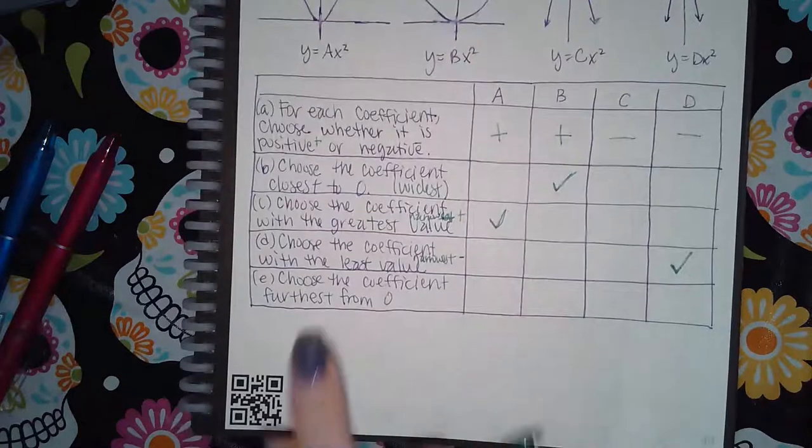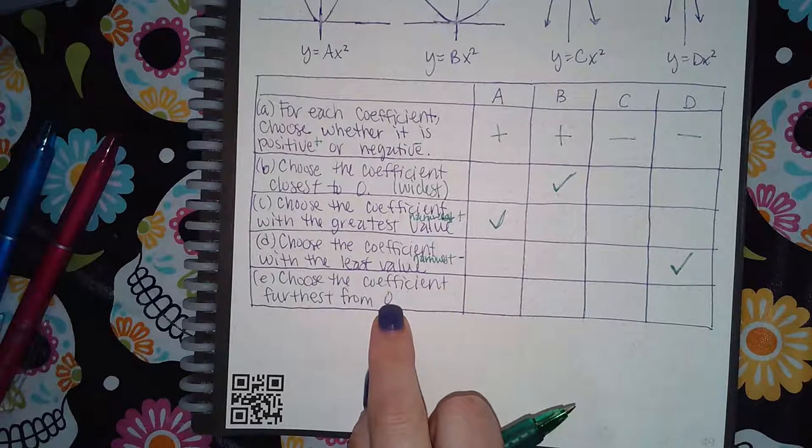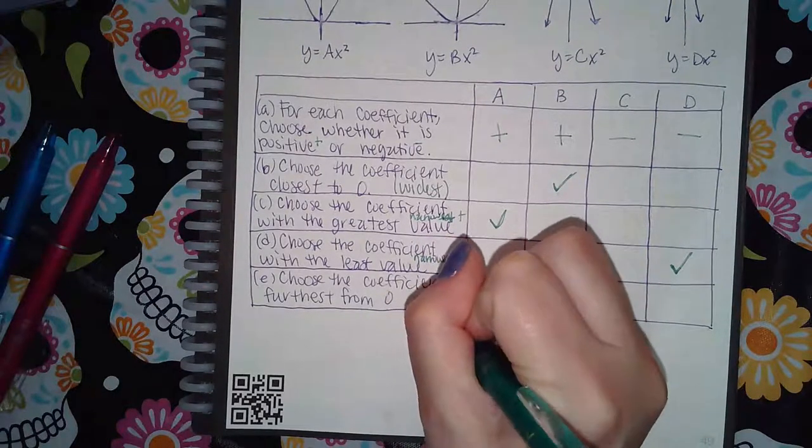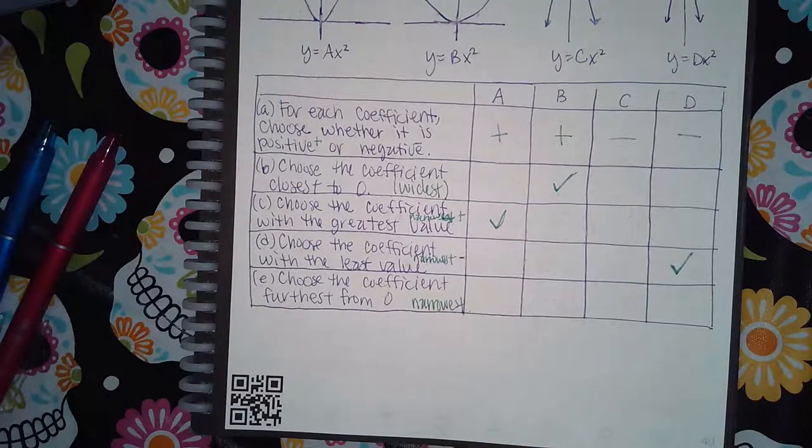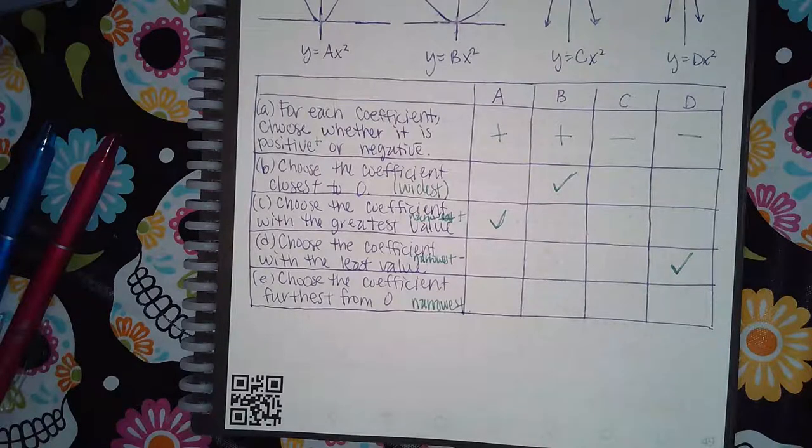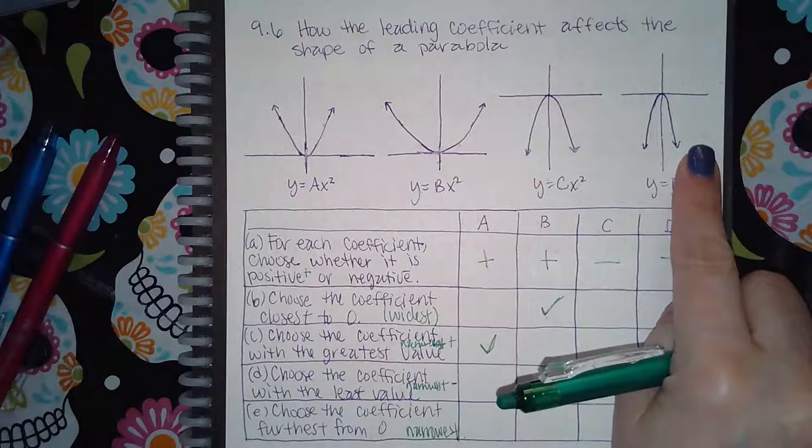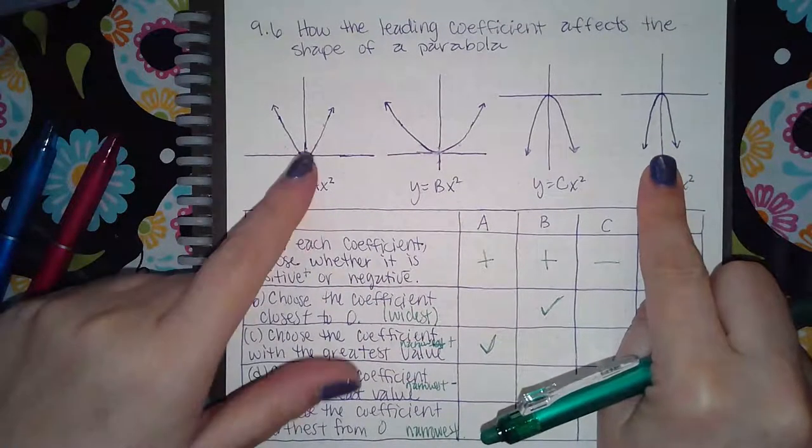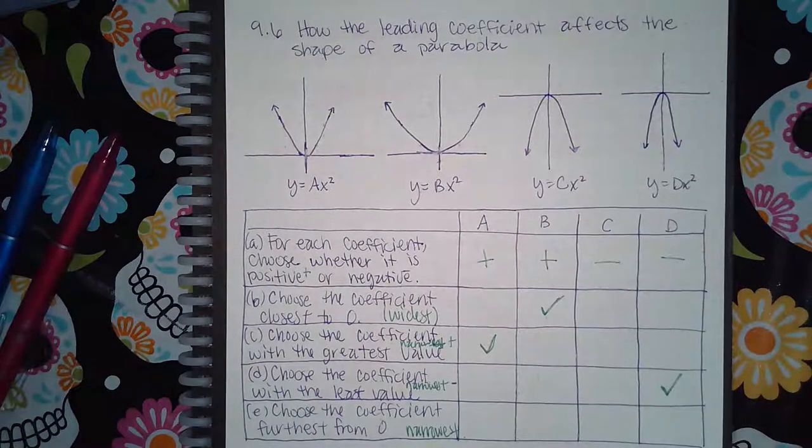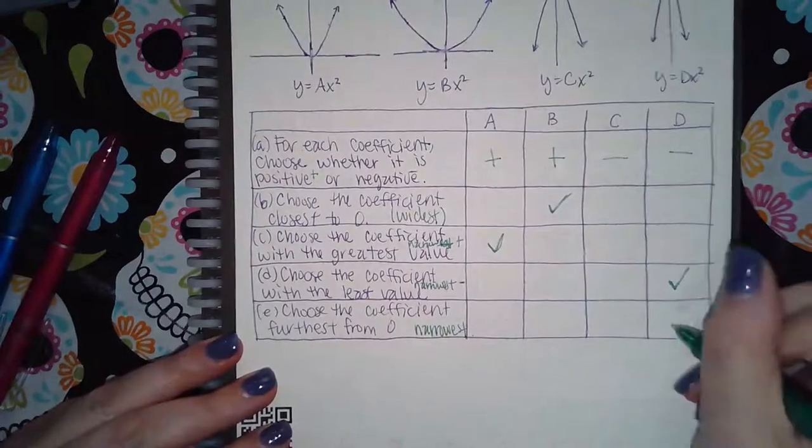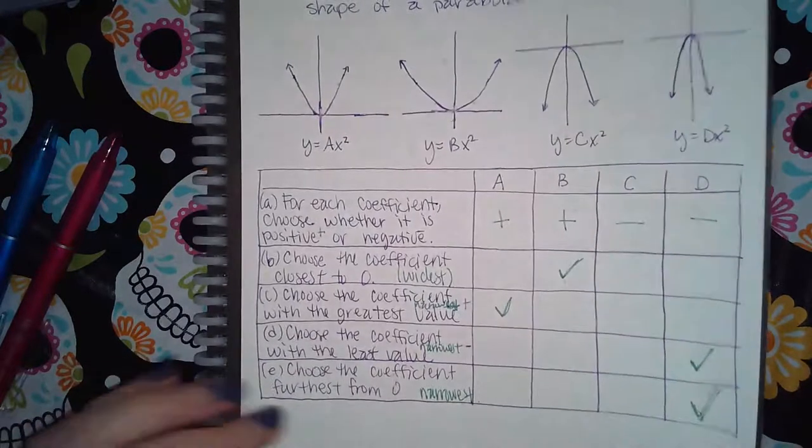Then now for E it says choose the coefficient furthest from zero. This means the narrowest regardless of whether it's positive or negative. It's just the narrowest. So between all of these, the most narrow graph is D. It is more narrow than part A, definitely more narrow than B, and also more narrow than C. So over here would also be D.